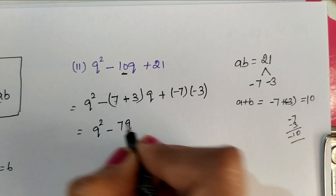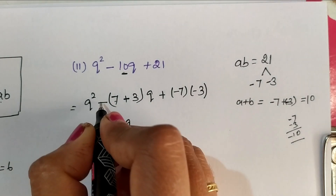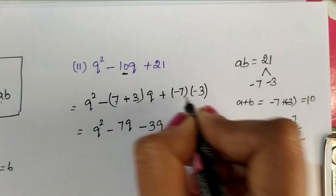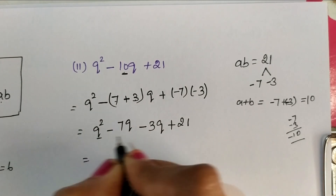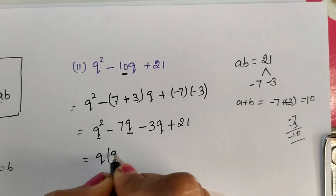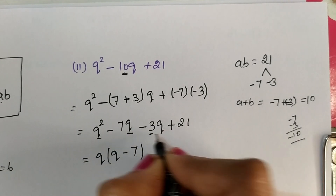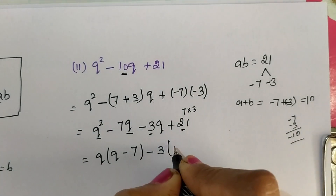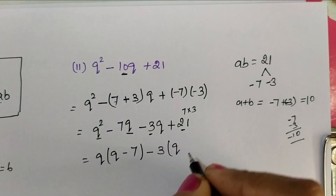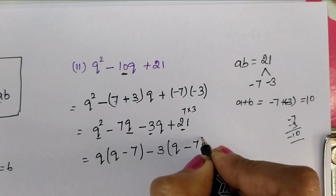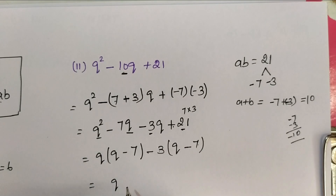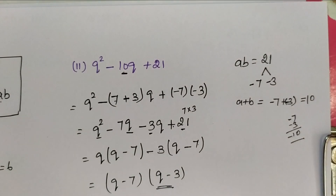Now Q square multiplied gives Q minus 7Q minus 3Q. Here we have Q as a common term, so taking Q out, remaining Q minus 7. Here 3 is common. 21 we can write as 7 into 3, taking 3 out, remaining Q minus 7. Minus into minus is plus. Here Q minus 7 is common, taking it out, remaining I have Q minus 3. So these are the factors of this expression.